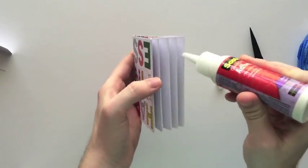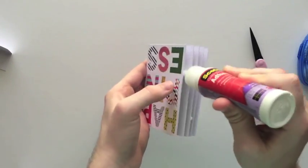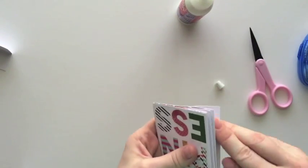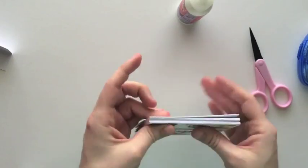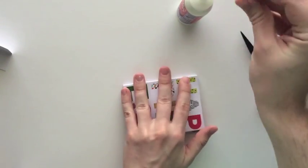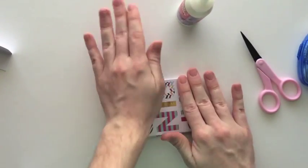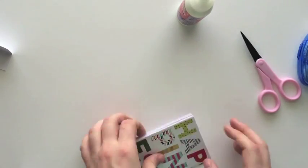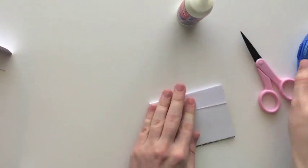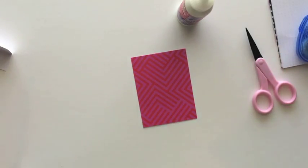So I used some Scotch quick dry adhesive to put in the binding here. You don't want it accordion-ing and folding out, so you want it to stay together so the pages will turn correctly. So I'm just pressing that, and you can put something heavy on top of it or even something like the glue runner.